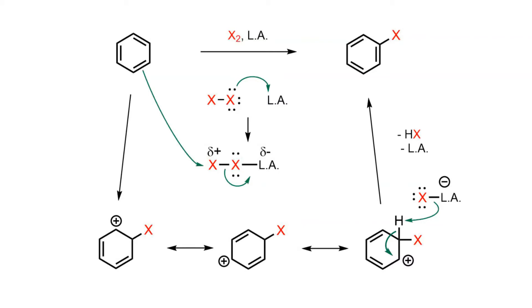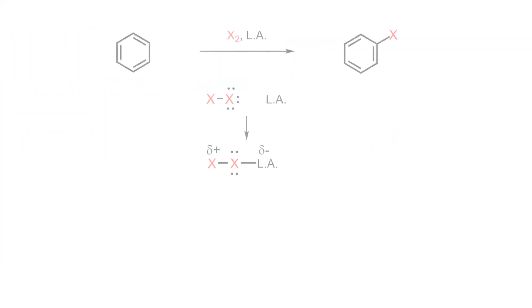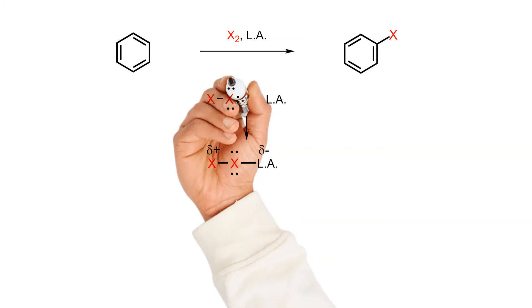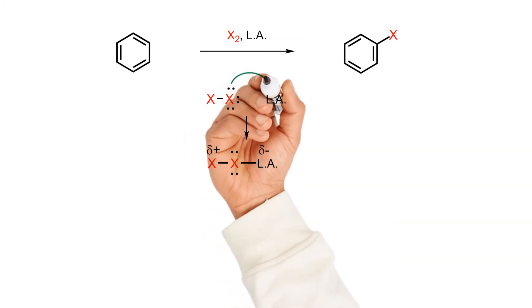Because benzene is only weakly nucleophilic, a catalyst is used to activate the halogen electrophile. Complexation of the catalyst with the halogen makes one end of the halogen more electron-poor and therefore more reactive.